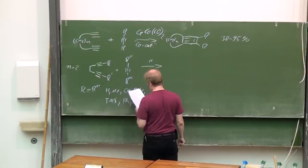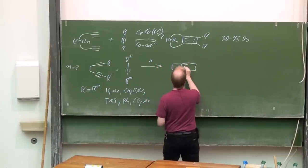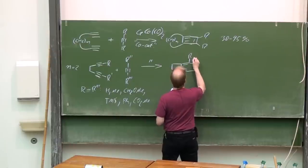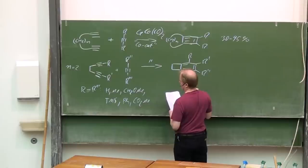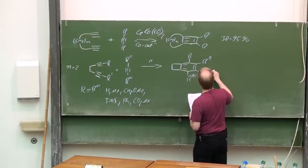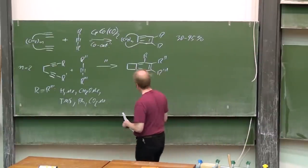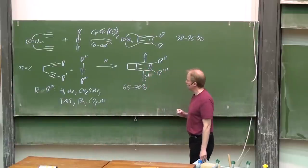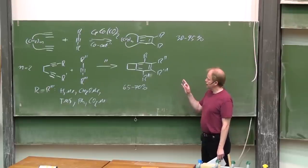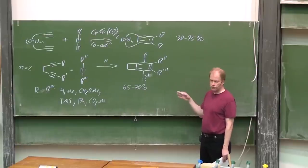Same catalyst as before. This is the result. Usually achieved range of 65 to 70% yield. And those benzocyclobutenes can be isolated under the reaction conditions, moderate reaction conditions of this cobalt catalysis.